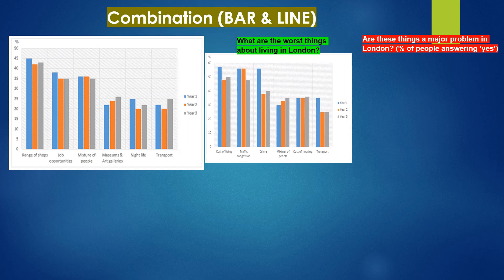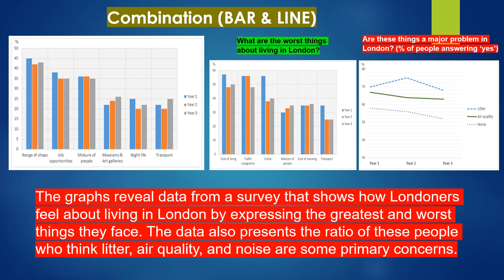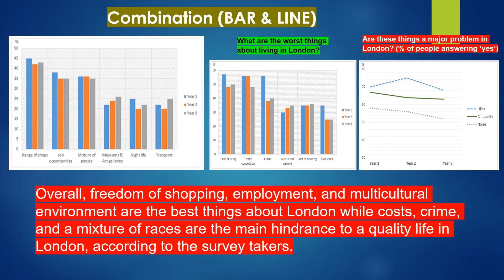Now let's take a look at the combination charts. Here we have two bar graphs and one line graph. The graphs reveal data from a survey that shows how Londoners feel about living in London by expressing the greatest and worst things they face. The data also presents the ratio of people who think litter, air quality and noise are some primary concerns. Overall, freedom of shopping, employment and multicultural environment are the best things about London, while costs, crime and a mixture of races are the main hindrance to a quality life in London, according to the survey takers.